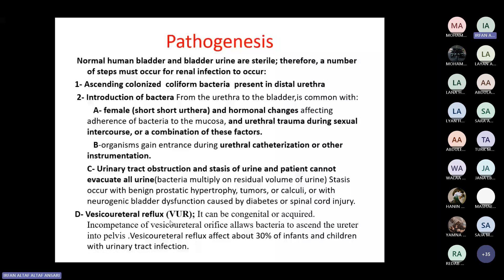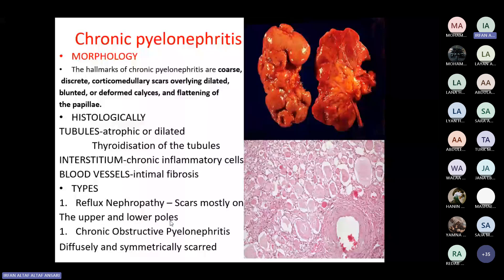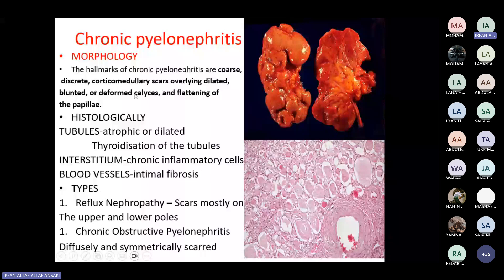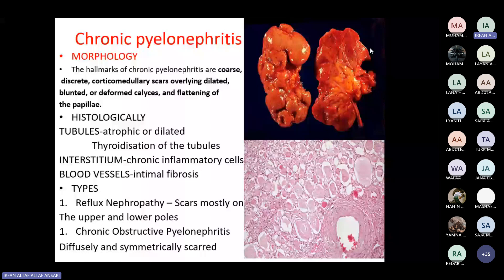The morphology of chronic pyelonephritis: the hallmark is coarse, discrete corticomedullary scars. Because of the infection there is fibrosis, leading to scars over the kidney. When you cut open the kidney, you see dilated or blunted, deformed calyces and flattening of the papilla. You cannot make out the pelvicalyceal junction, minor or major calyces, or renal papilla — these are all lost.